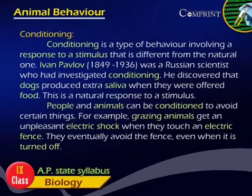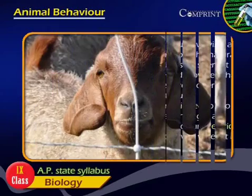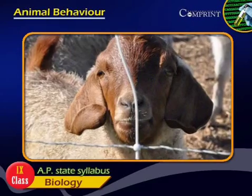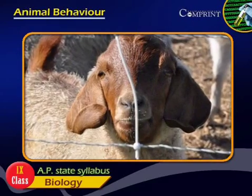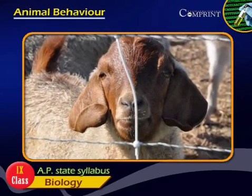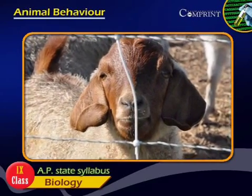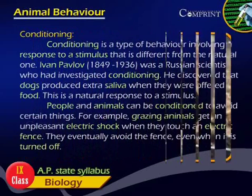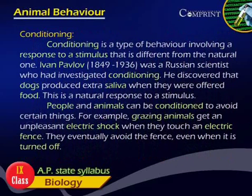People and animals can be conditioned to avoid certain things. For example, grazing animals get an unpleasant electric shock when they touch an electric fence. They eventually avoid the fence even when it is turned off.